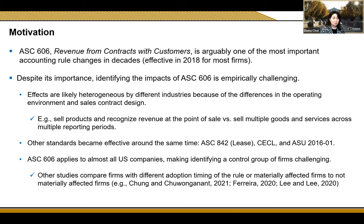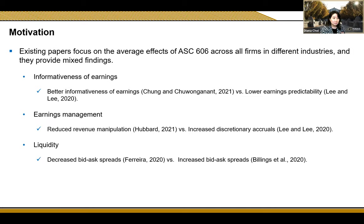Also, there are other standards that became effective around the same time. Lastly, the standard applies to almost all U.S. companies. Therefore, it is hard to identify a proper control group. Other studies compare firms with different adoption timing of the rule, or materially affected firms to not materially affected firms. These differences in sample compositions and treatment-control group definitions may lead to mixed, inconsistent findings in the existing studies. For example, Chung and Chung in 2021 find that informativeness of earnings increases after adopting AAC 606, but Li and Li in 2020 find lower earnings predictability. Similarly, there are mixed findings for earnings management and liquidity.